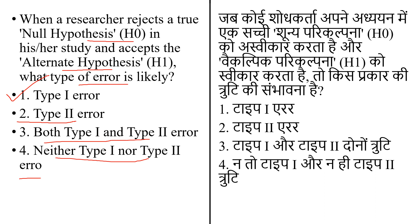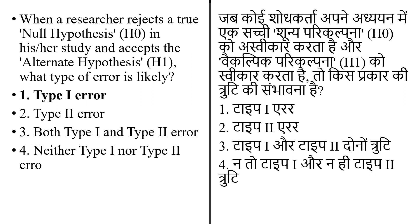The Type 2 error is a false negative, also known as an error of omission. The correct answer is option 1 — when the researcher rejects a true null hypothesis and accepts the alternate hypothesis, a Type 1 error occurs.